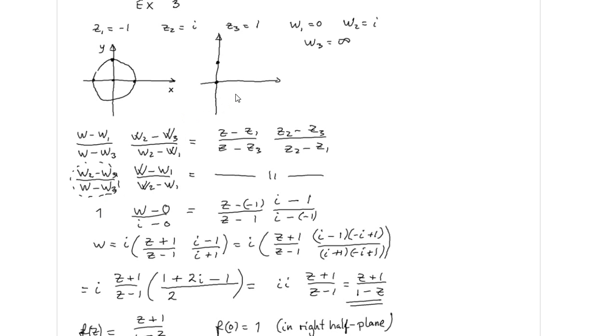Then we insert the other points: w1 equal to 0, w2 is here, it's equal to i.